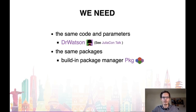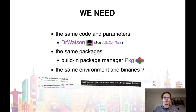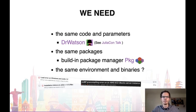We also need the same packages across all devices and people. Fortunately, the package manager Pkg and its manifest files already take care of that. However, there's a last aspect that sometimes gets overlooked. We may also need the same environment and the same binaries. While pure Julia code is already highly portable, some of the binaries may not be and may, even if only temporarily, cause problems on different setups.